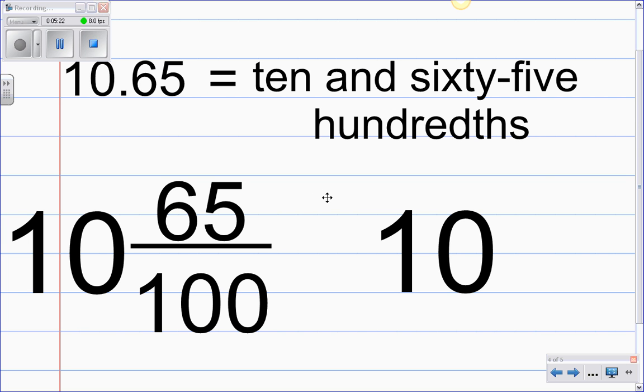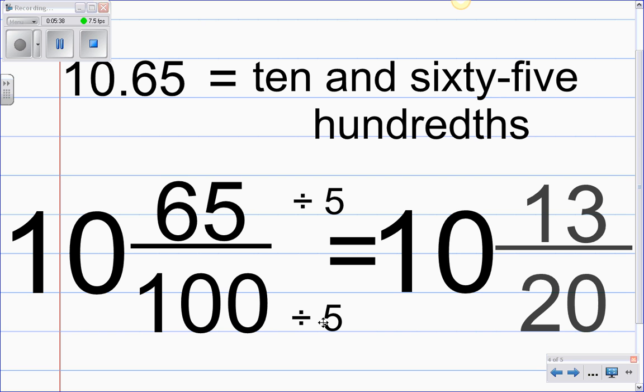So let's give divide by 5 a try. So if we divide the top and the bottom by 5 to reduce our fraction, what we will get is 65 divided by 5 is 13 and 100 divided by 5 is 20. Now looking at 13 and 20, we are finished because we cannot reduce that fraction any further.